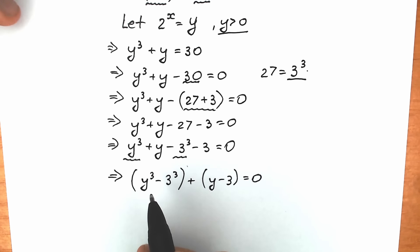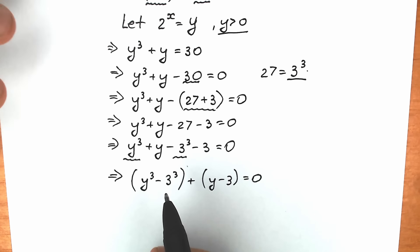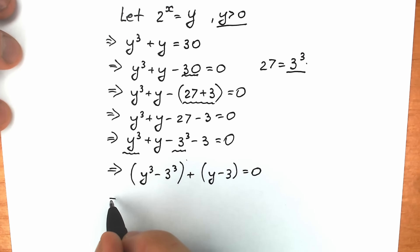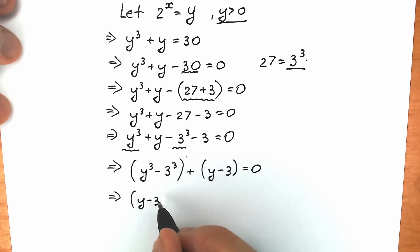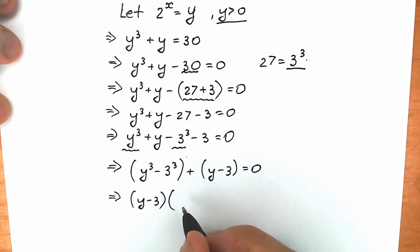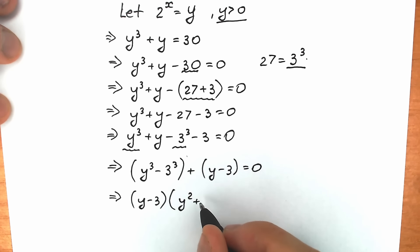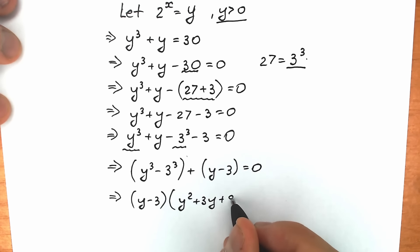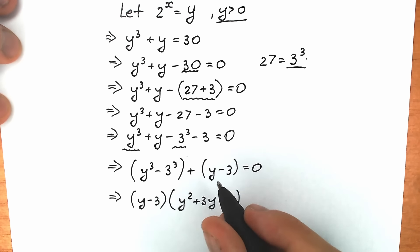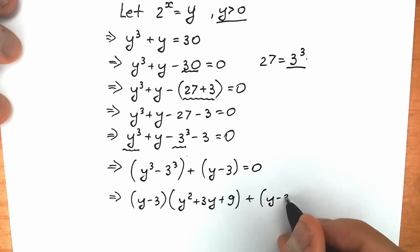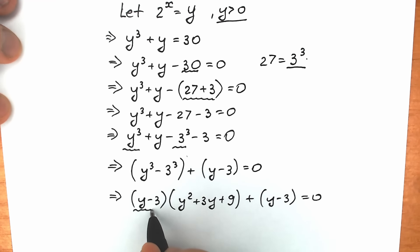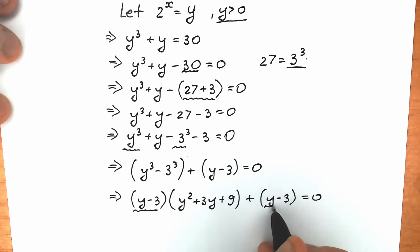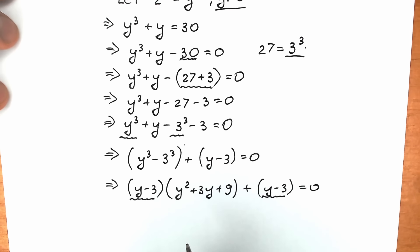Now, using the basic school formula — the difference of two cubes — let's apply it. We have (y minus 3) times (y squared plus 3y plus 9), plus y minus 3. The final tricky move: we have (y minus 3) in the first product, and we also have (y minus 3) on the right side of the addition sign, so we can factor out (y minus 3).